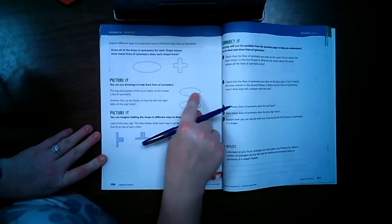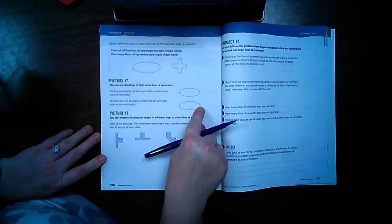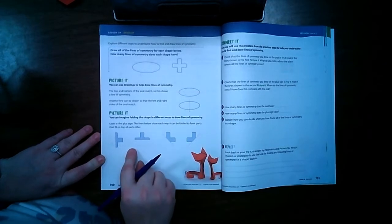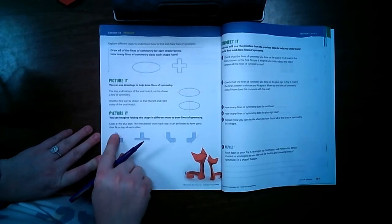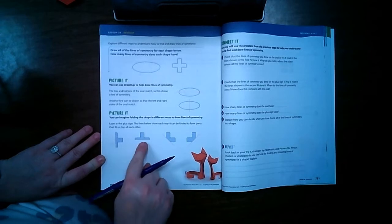Right here it's telling you to picture it. It has it just with this one line of symmetry and then with this other line for the plus sign.